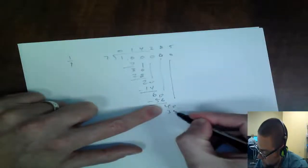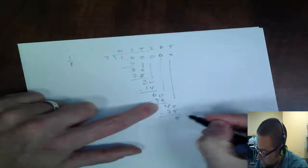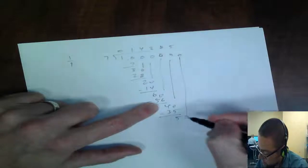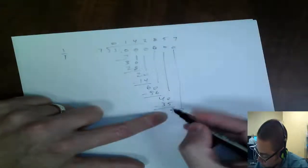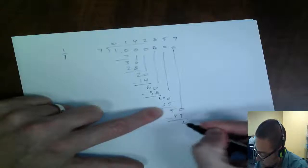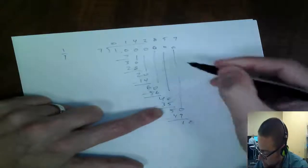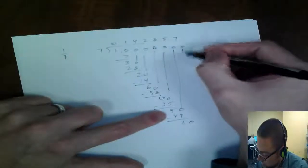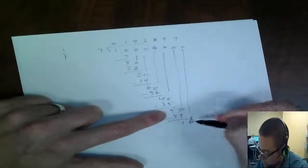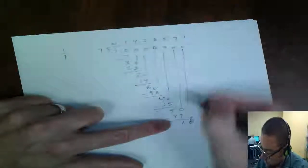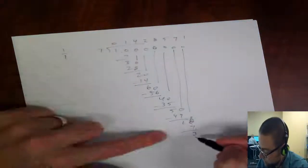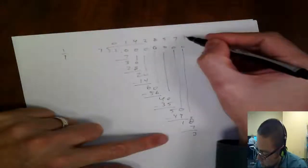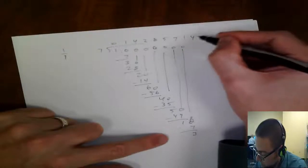So 7 goes into 40, 5 times, which is 35, and subtract, I get a 5, 7 goes into 50, 7 times, which is 49, and I'm back to my 10, right? So the answer, which is 1, which is 7, 3, and then it will repeat itself, so then I have, yeah, so it's 1, 4, 2, 8, 5, 7.